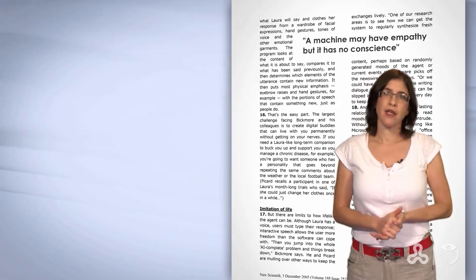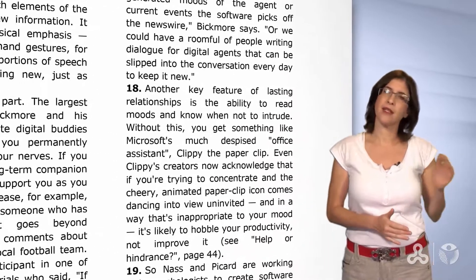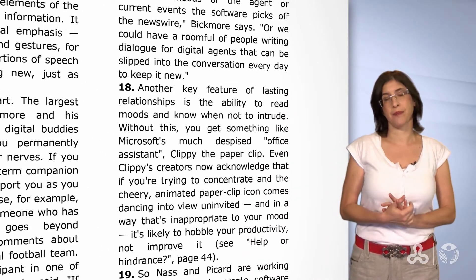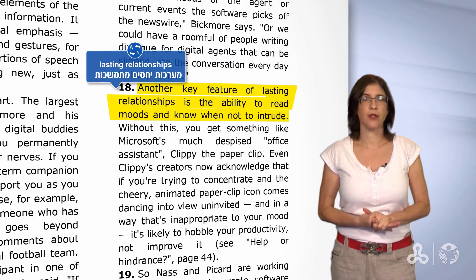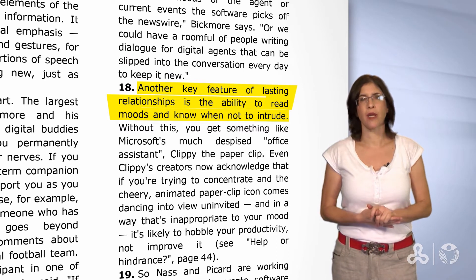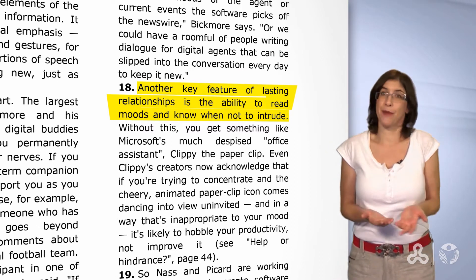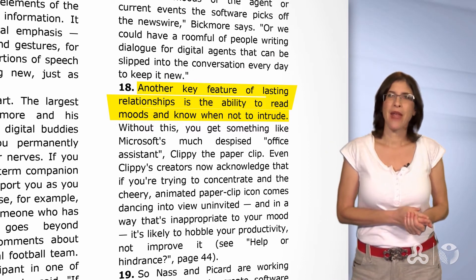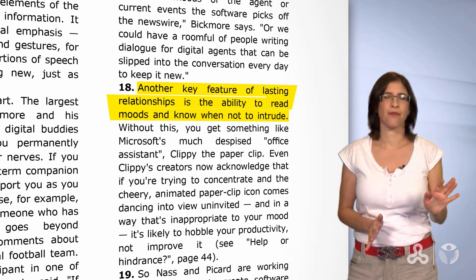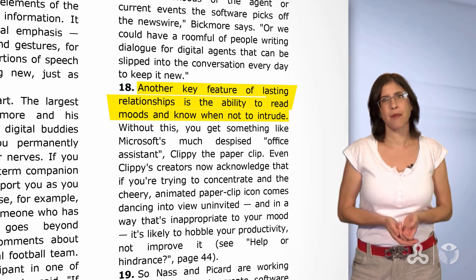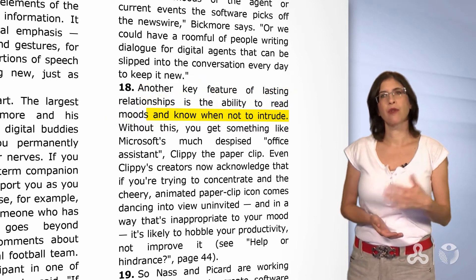We already read the beginning of paragraph 17 — the writer starts talking about limitations there. Let's go on to paragraph 18: 'Another key feature of lasting relationships is the ability to read moods and know when not to intrude.' Can machines do this? Maybe this is a limitation of machines. We will read more when we read the text.